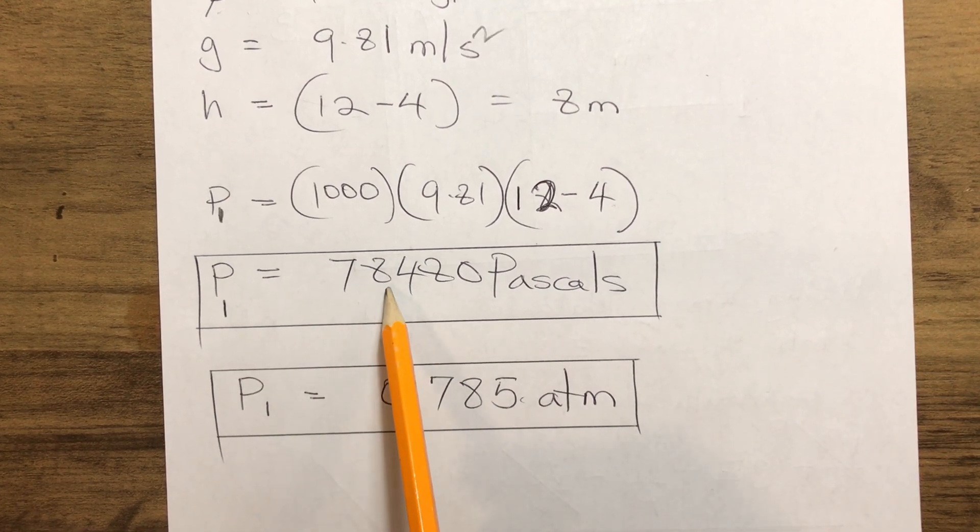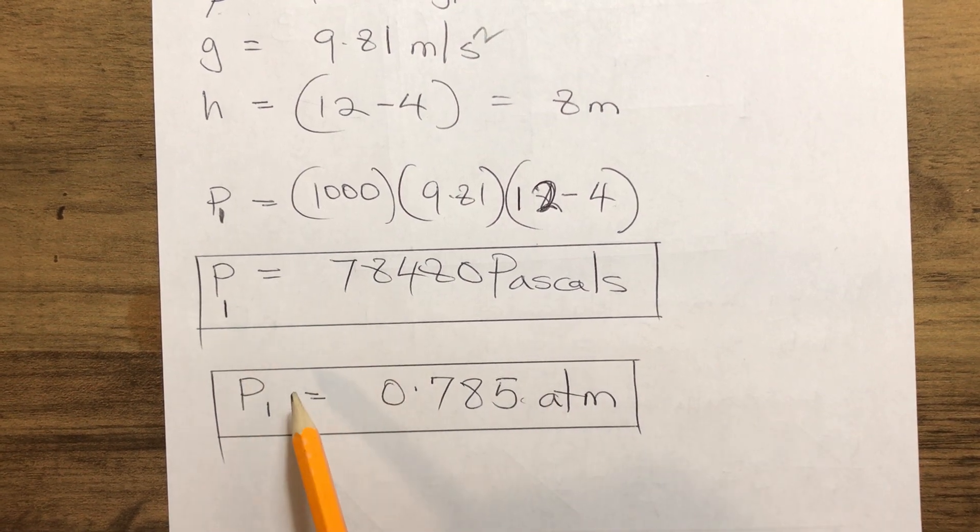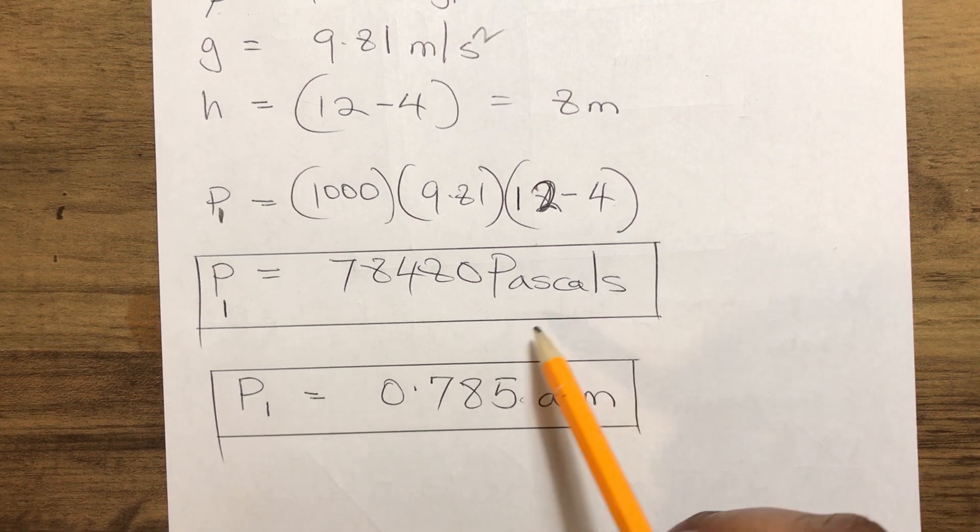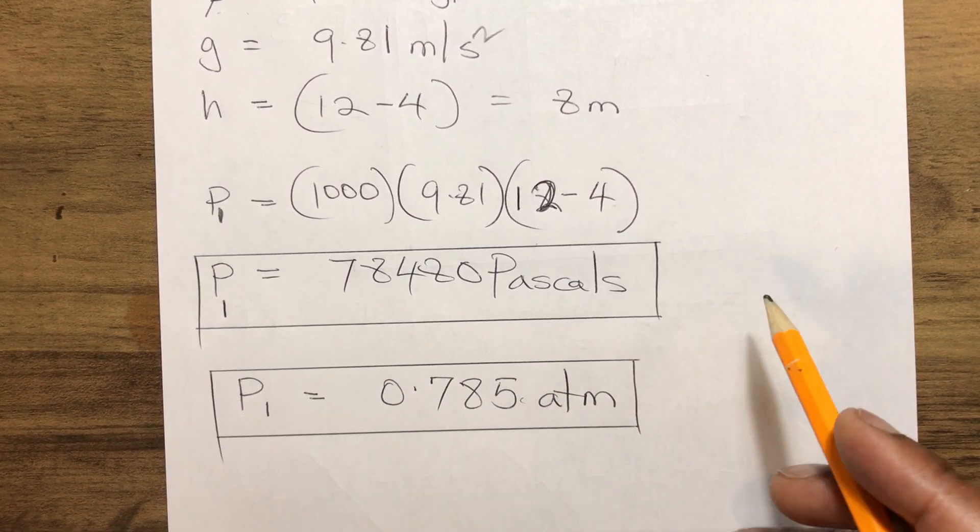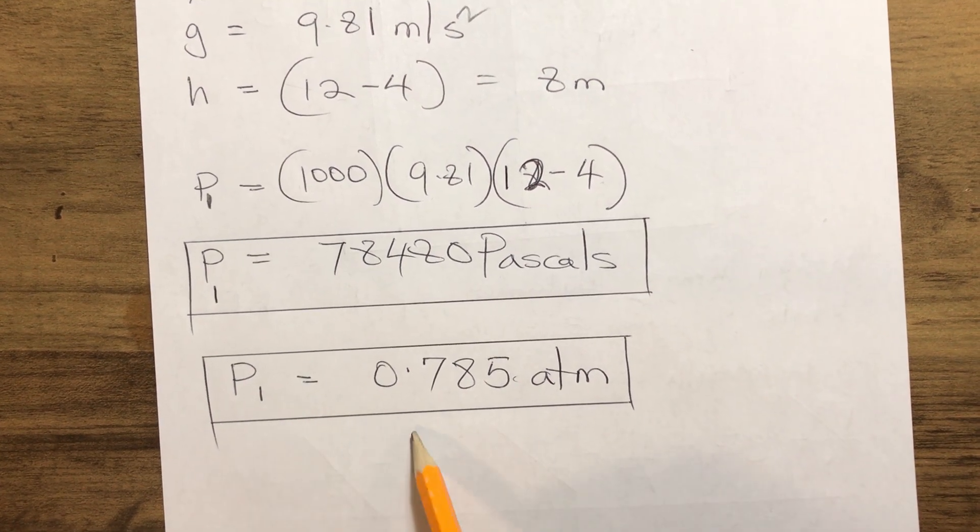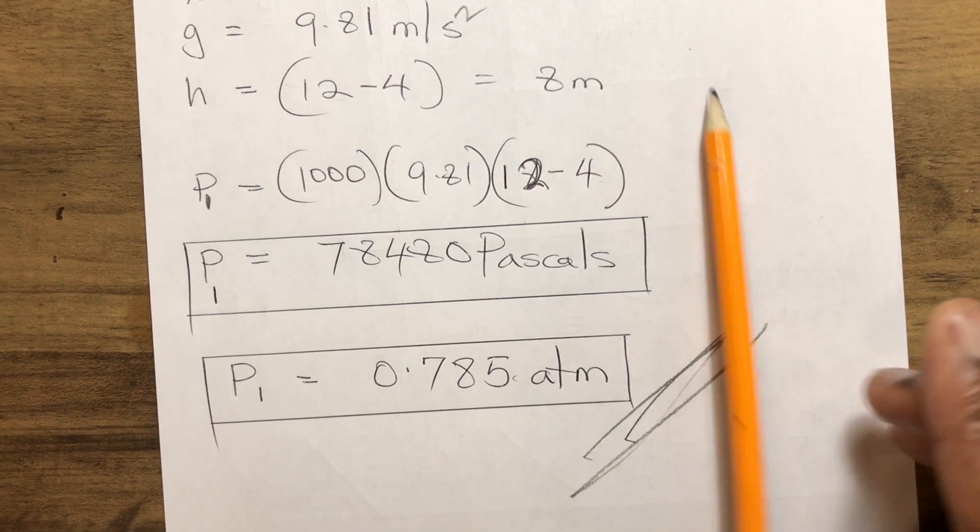In order for us to transfer to atmosphere pressure, we divide it by 10 raised to power 5. So our calculated pressure P1 equals 0.85 atmosphere. Thank you.